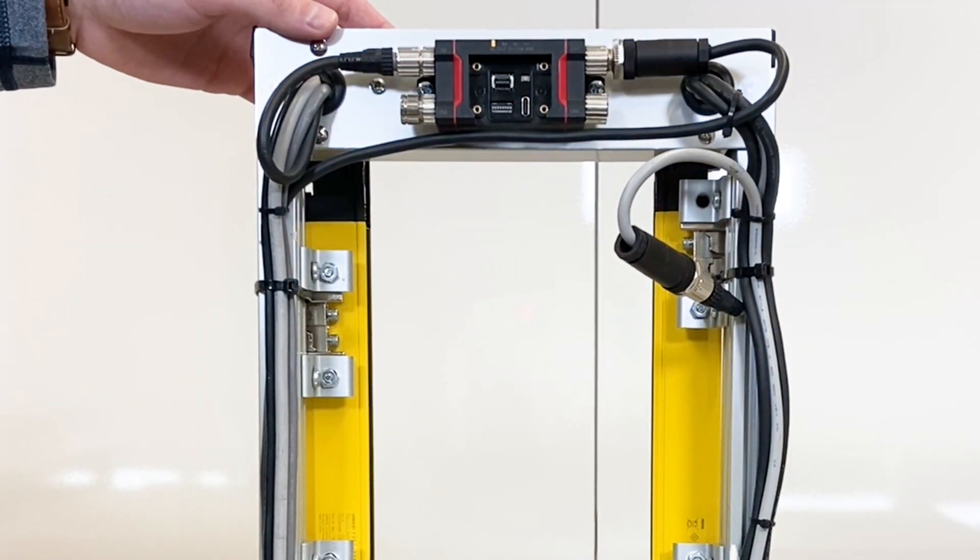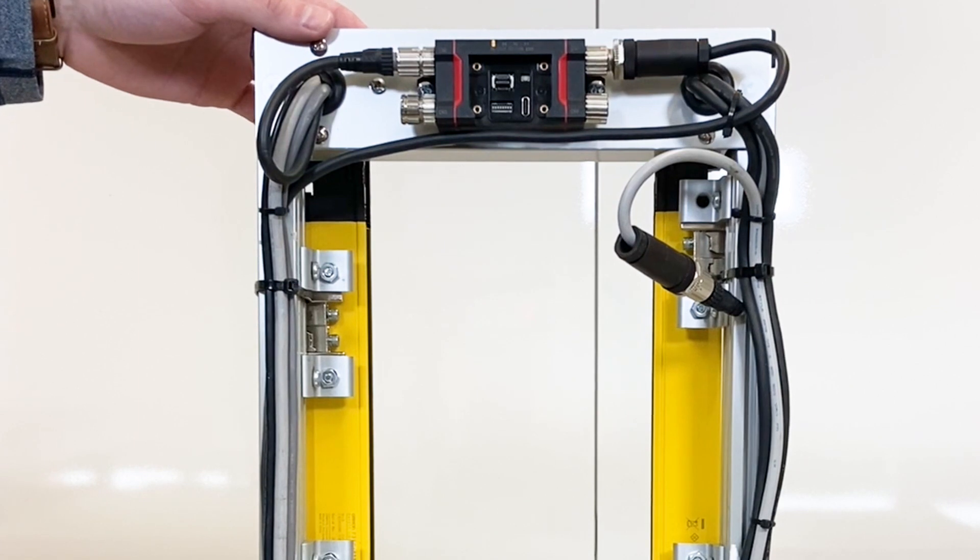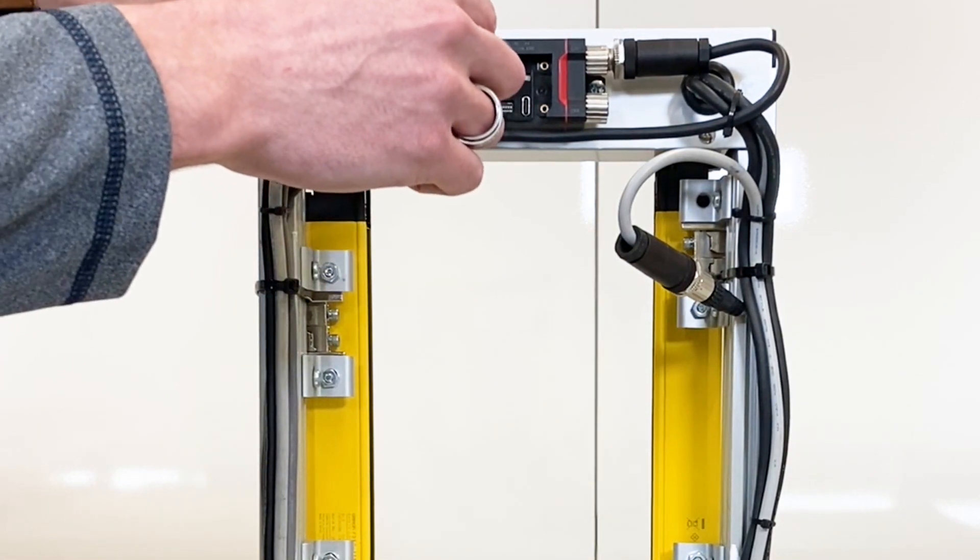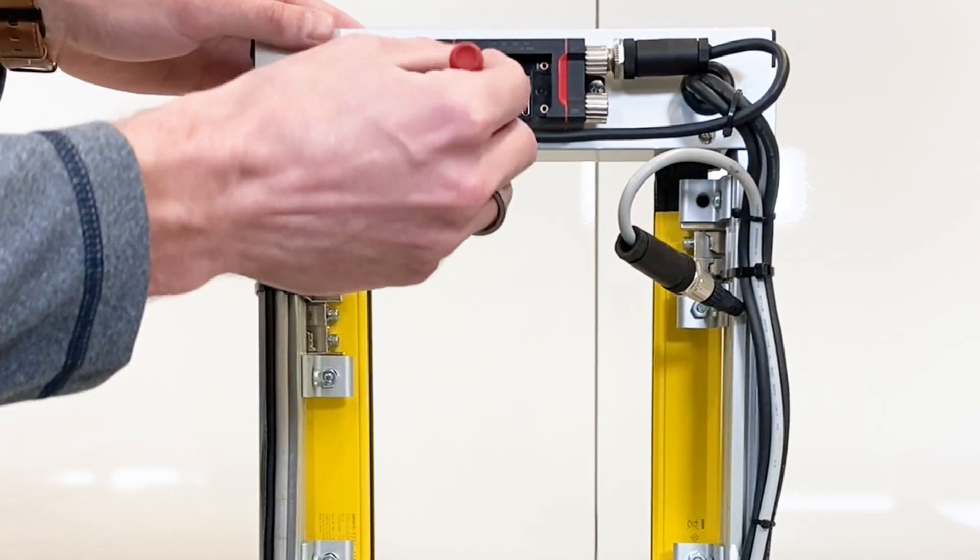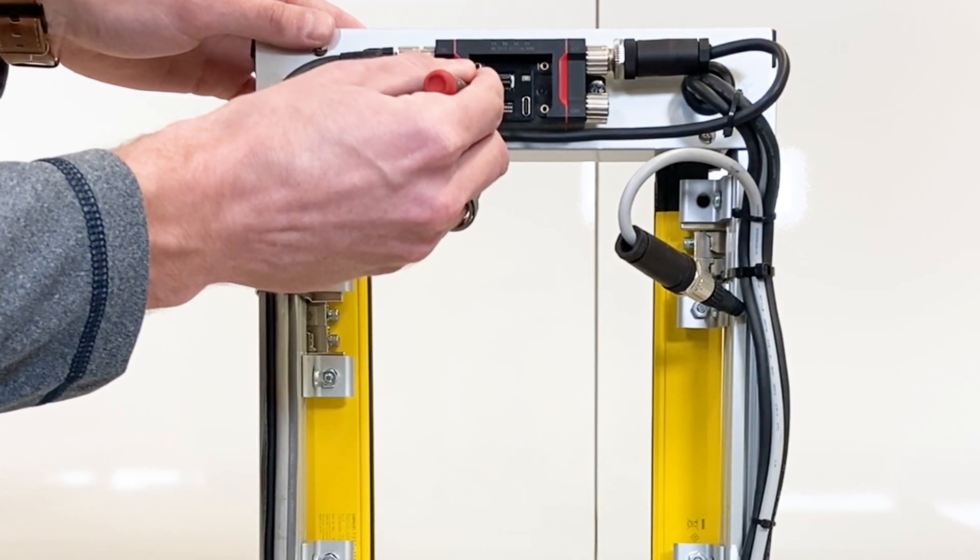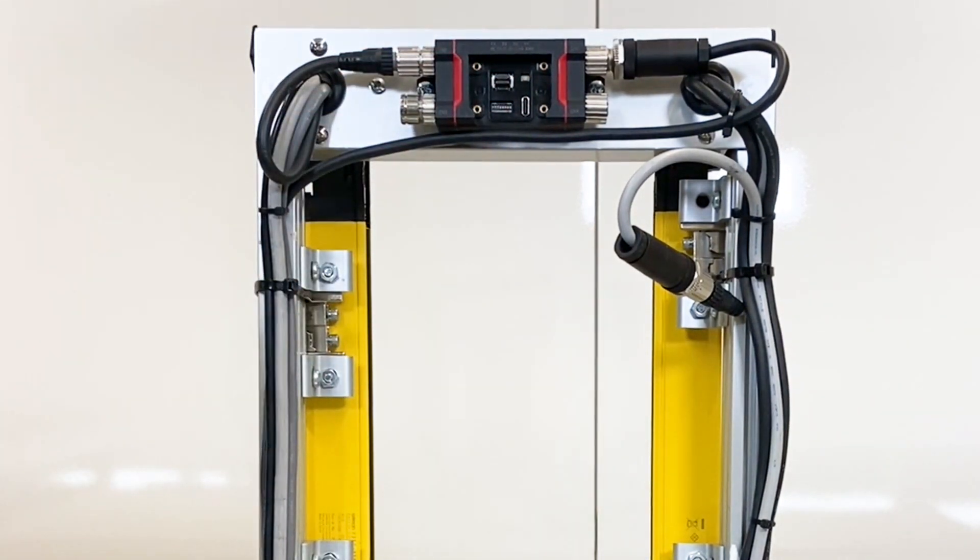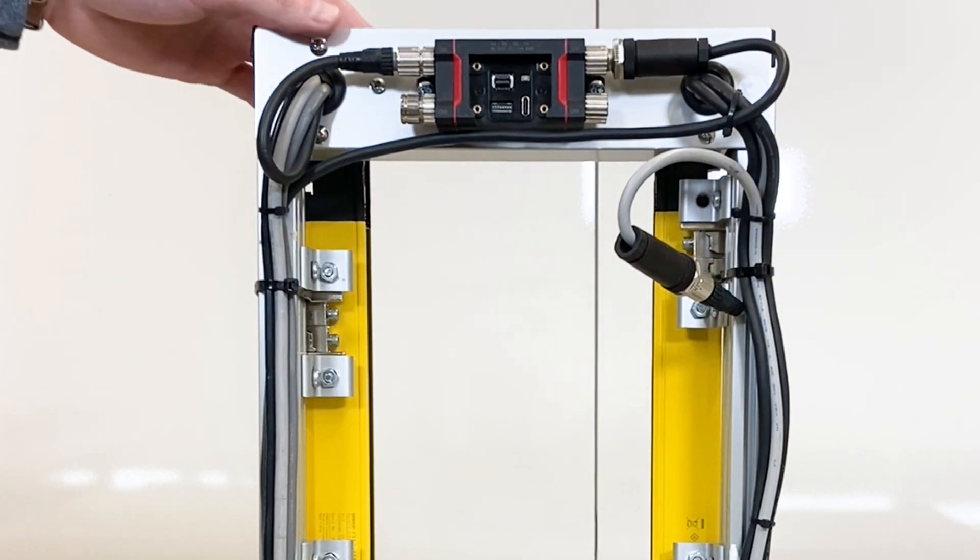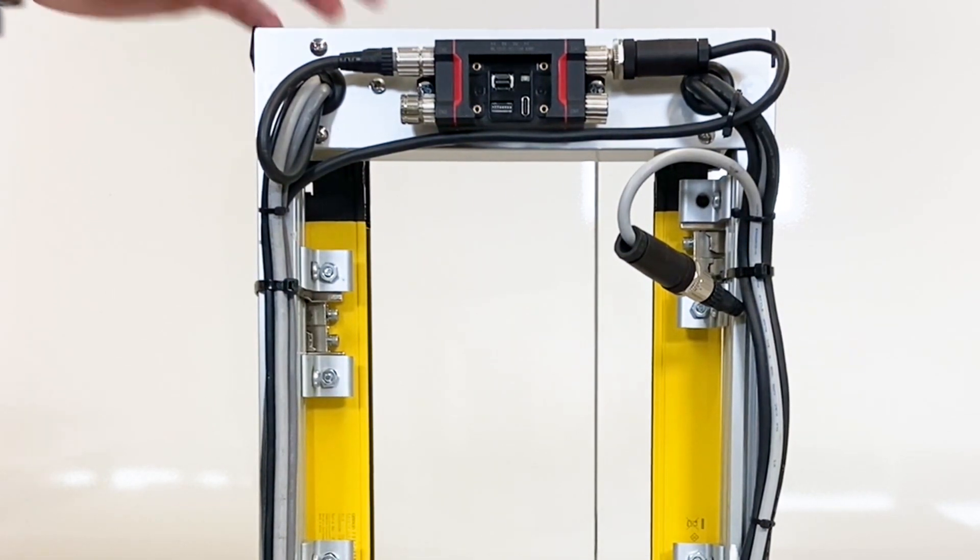From here, what you want to do is power your safety light curtain off. And then you will want to set the DIP switches to your desired programming, which is DIP switches 1, 2, and 3 in the on position. Once they're in the right position, what you want to do is power your light curtain back on. And everything will be programmed properly.